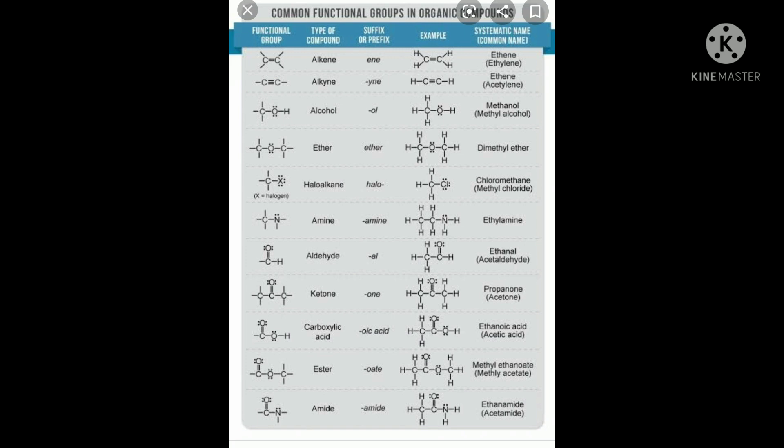For amine (CN), the suffix 'amine' is used. Example: ethylamine. For aldehyde (CHO group), the suffix 'al' is used. Example: ethanal. For ketone, the functional group is C=O (carbonyl) between two carbons; the suffix 'one' is used.